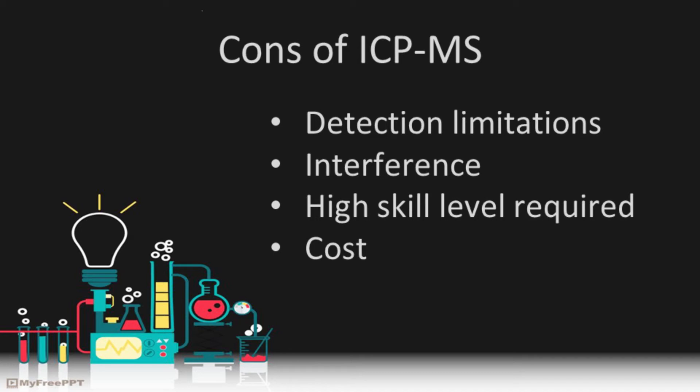Disadvantages of ICP-MS include detection limits. As the technique relies on the ionization of elements, elements that tend to form negative ions are difficult to detect — these include the halogens such as chlorine, iodine, and fluorine. Poor sample transport and increased instability of samples over long measurement sequences is also a concern. Gaseous elements cannot be detected, such as hydrogen, helium, carbon, and most actinides. Iron detection limits are only around 4 parts per billion due to the many polyatomic interferences of other compounds which have the same mass-to-charge ratio.